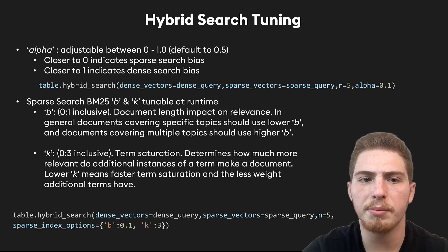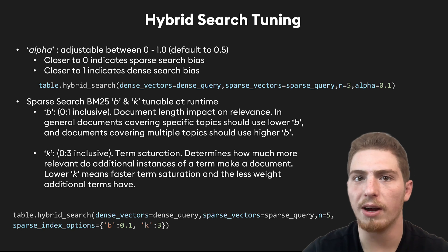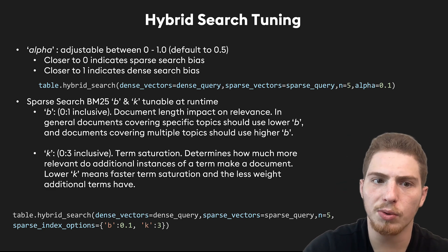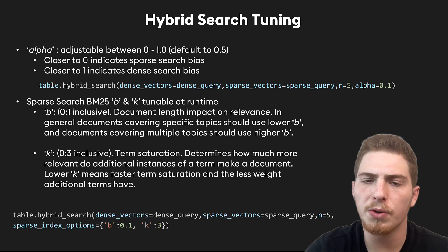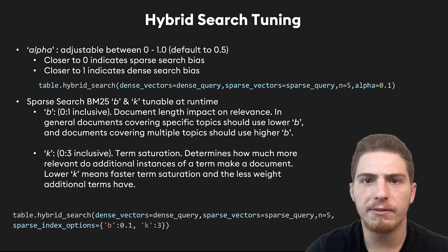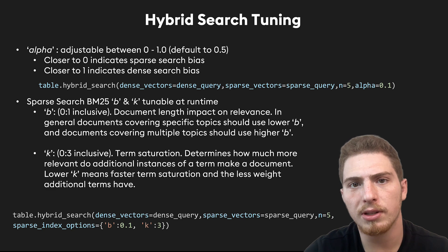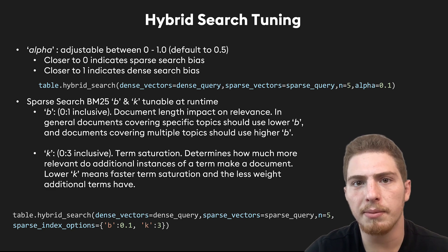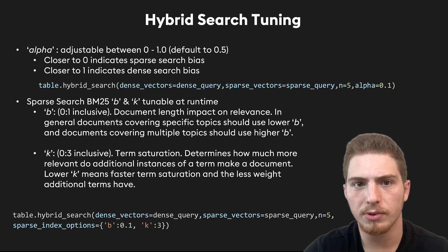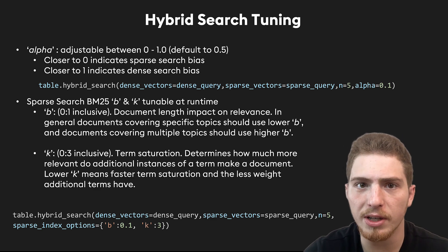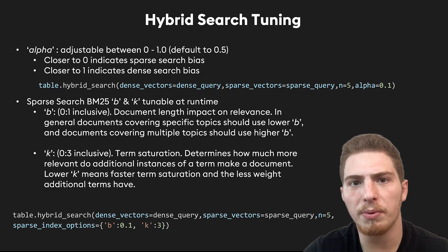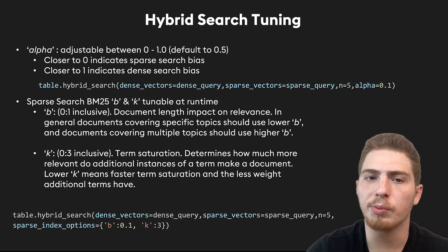Our alpha parameter is going to be adjustable between zero and one, and the default is 0.5, which means we give equal relevancy to our keyword score and our semantic score. If alpha is closer to one, we give more of a preference towards our dense scores. If it's closer to zero, we care more about the keywords and keyword similarity. It makes sense to play around with alpha because it can have a very real impact on search performance. Generally around 0.5 is good, around 0.7 — a slightly bigger preference to dense search — is great. But if your data is completely outside the scope of your embedding model, then having a score closer to zero will make more sense.